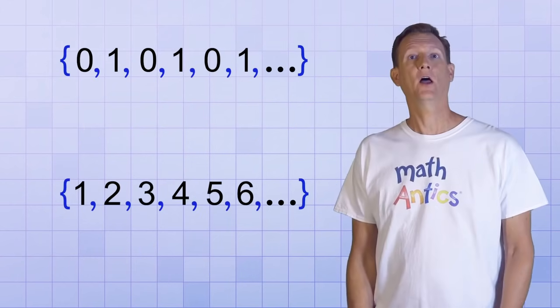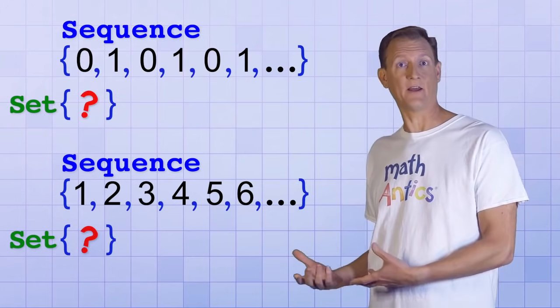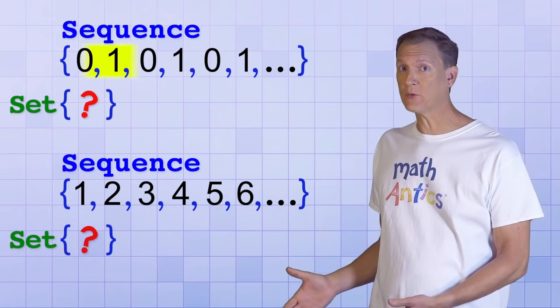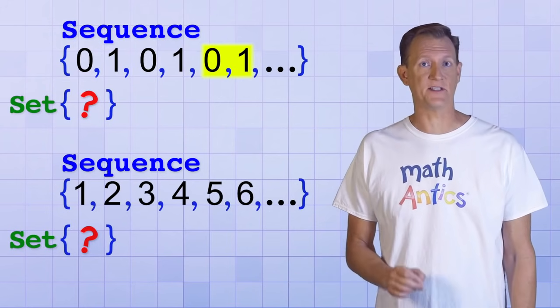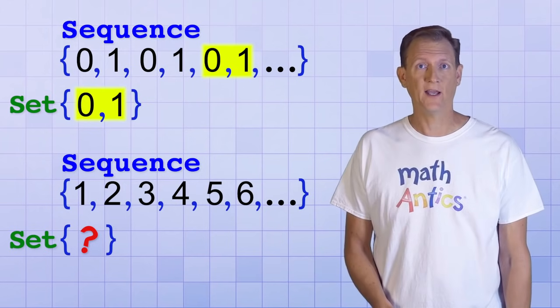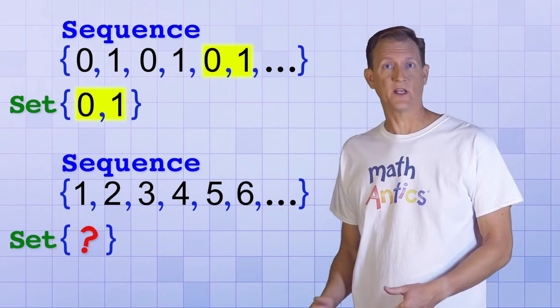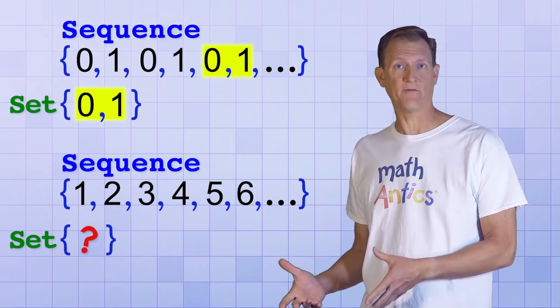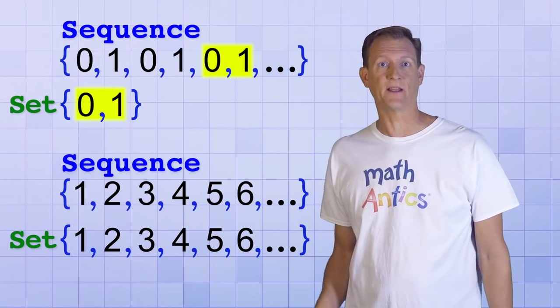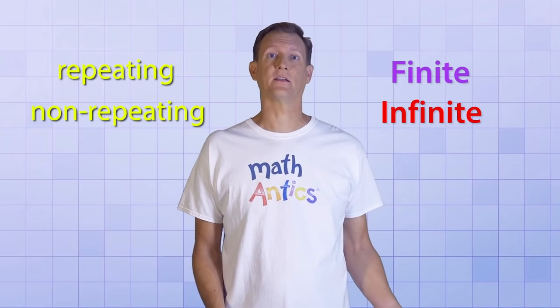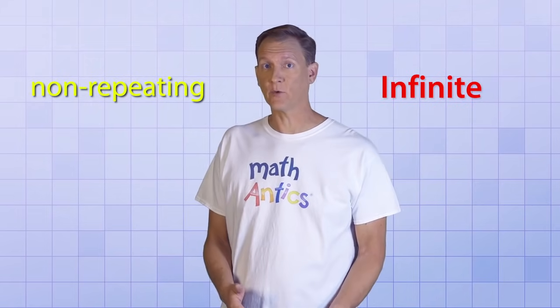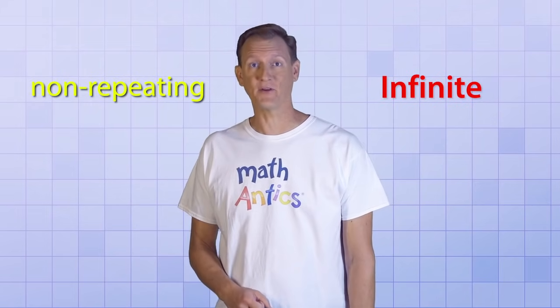For these last two infinite sequences, what's the set of numbers that each contains? The first keeps on repeating two numbers forever, so even though the sequence is infinite, the set it uses is finite — it only contains 0 and 1. But in the second infinite sequence, none of the elements are ever repeated, so the set of numbers is exactly the same as the sequence itself — it's also infinite. So now you know that some number patterns are repeating and some aren't, and some are finite while some are infinite.